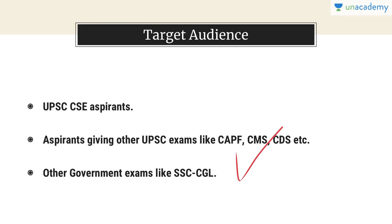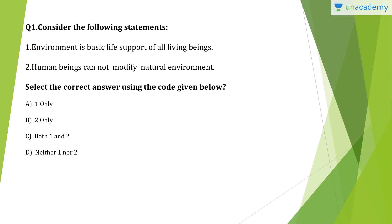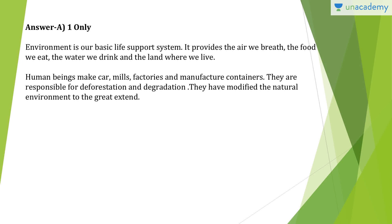We'll start with Class 7th Geography, Questions 1 to 10, covering the entire NCRT. Question 1: Environment is basic life support of all living beings — that statement is 100% correct. But 'human beings cannot modify natural environment' is wrong. Answer is A, one only. Environment is our basic life support, and we can build factories, mills, and manufacture containers, which are responsible for deforestation and degradation — meaning we can and do modify our environment.